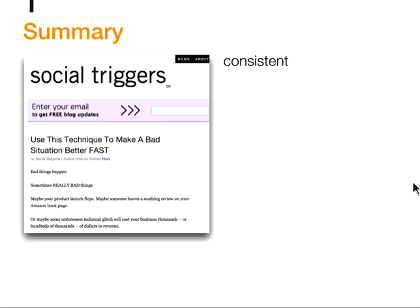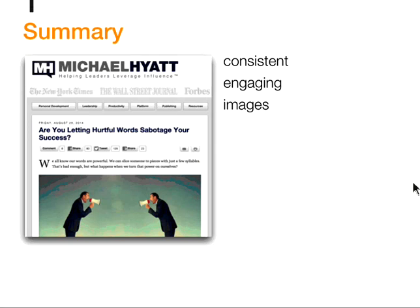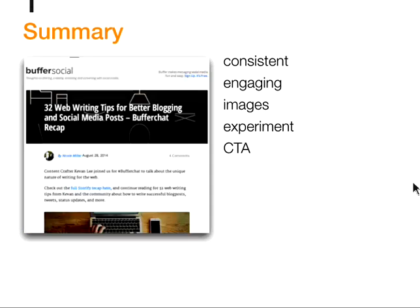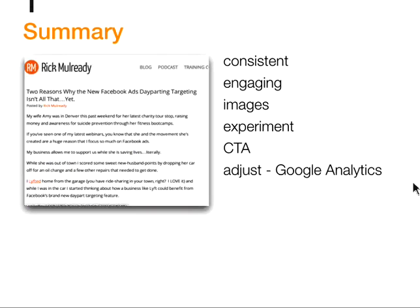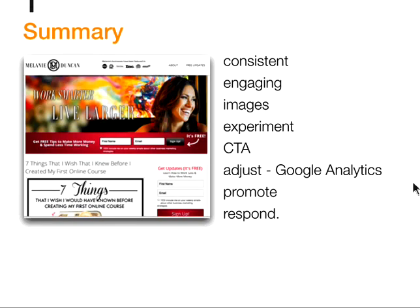Quick summary on how to be successful with blogging: number one is be consistent — please be consistent, you will get more out of SOS if you blog consistently, we recommend once a week. Keep it engaging by experimenting with different ways. Put in lists and use images, which help people read and stay longer. Experiment with different topics to see what works. Have a call to action so people do something after reading. Adjust based on Google Analytics we send you weekly — pay attention to your top ranking blogs. Promote your blogs as well. And please respond to people as they respond to you.